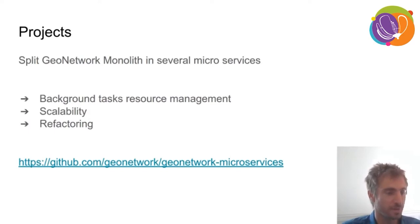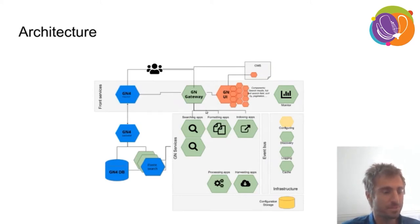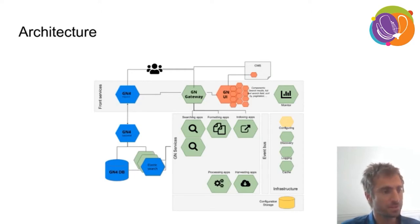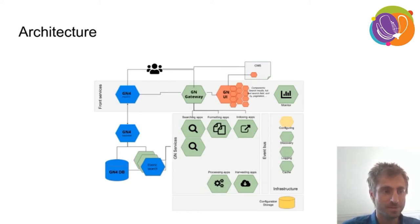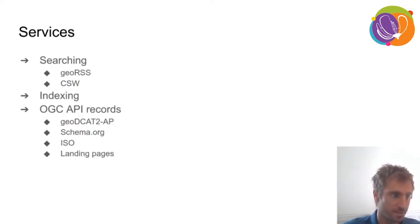There is a project on GitHub where you can find the sources and the progress. In the architecture, in the middle in green you have all the microservices behind a gateway provided by the project. For now, during the transition, it still lives beside GeoNetwork 4 API, and you can use the microservices API from the GeoNetwork 4 UI as well. Currently there are three services: search, CSW GeoRSS indexing, and OGC API Records.